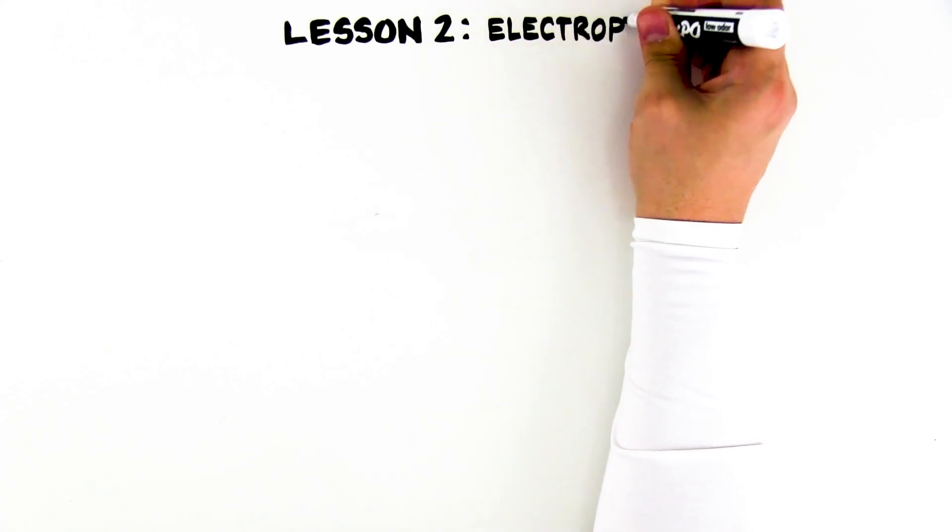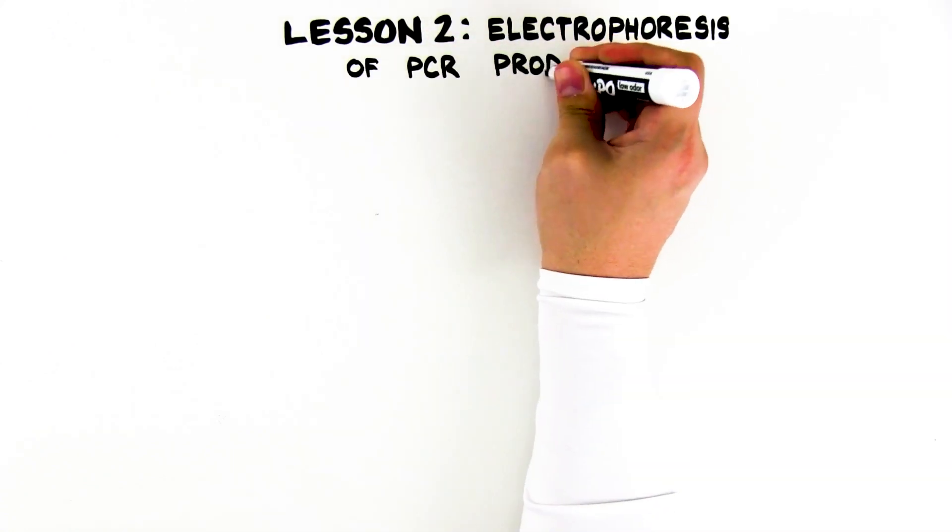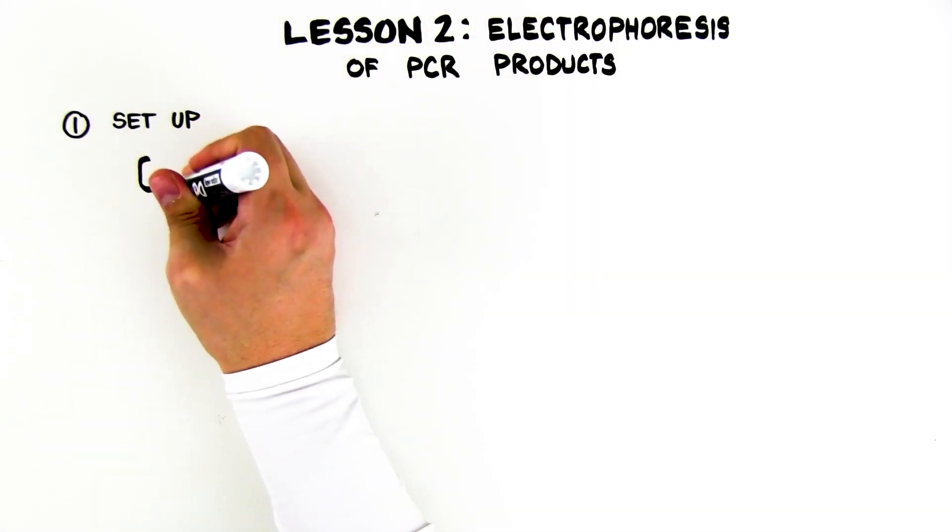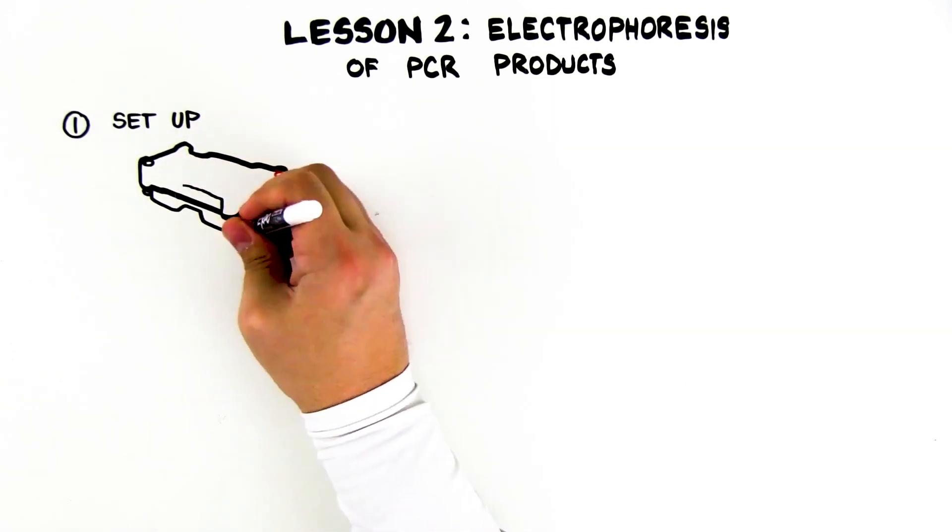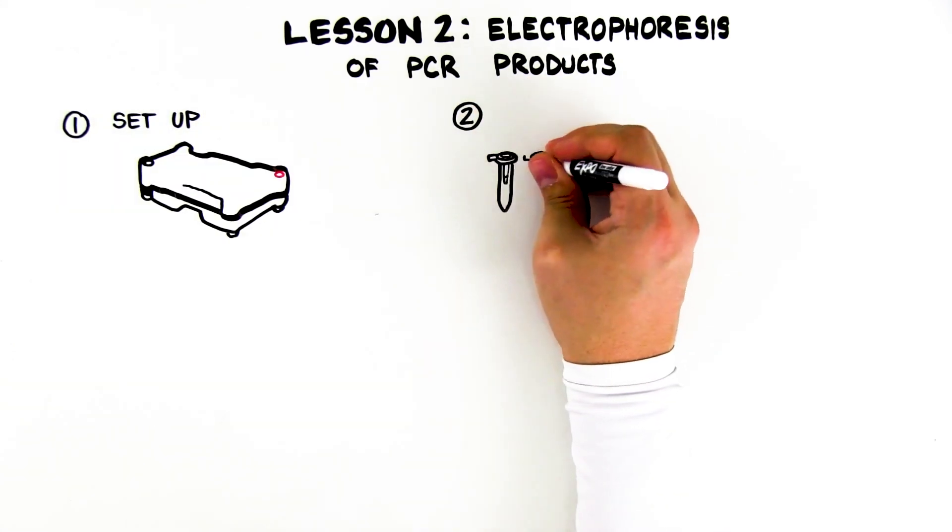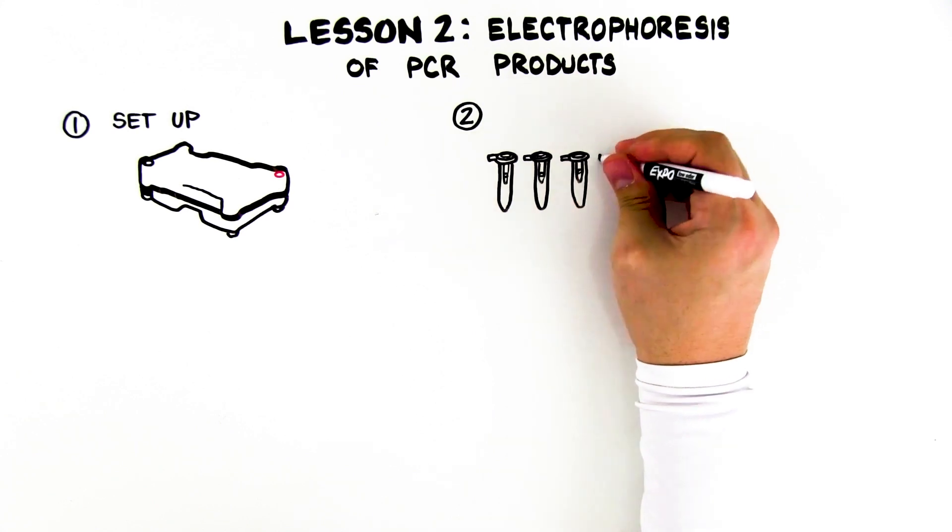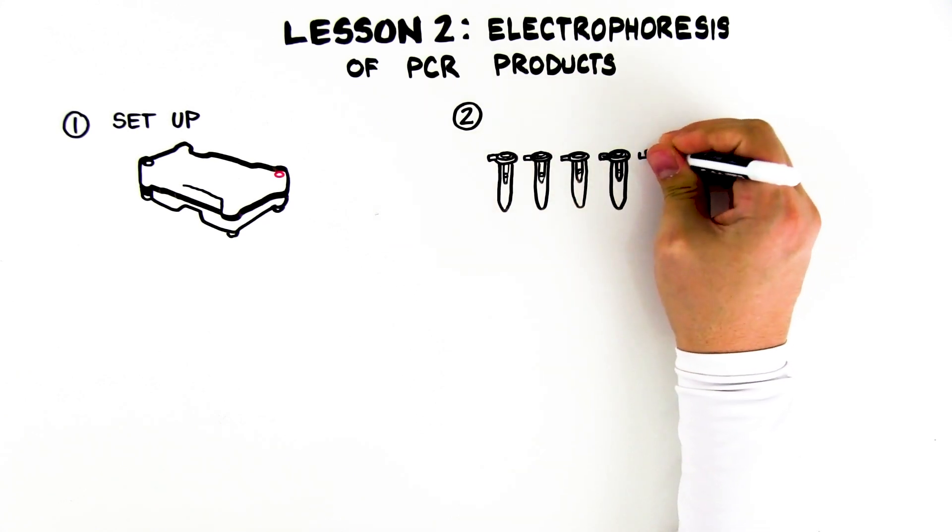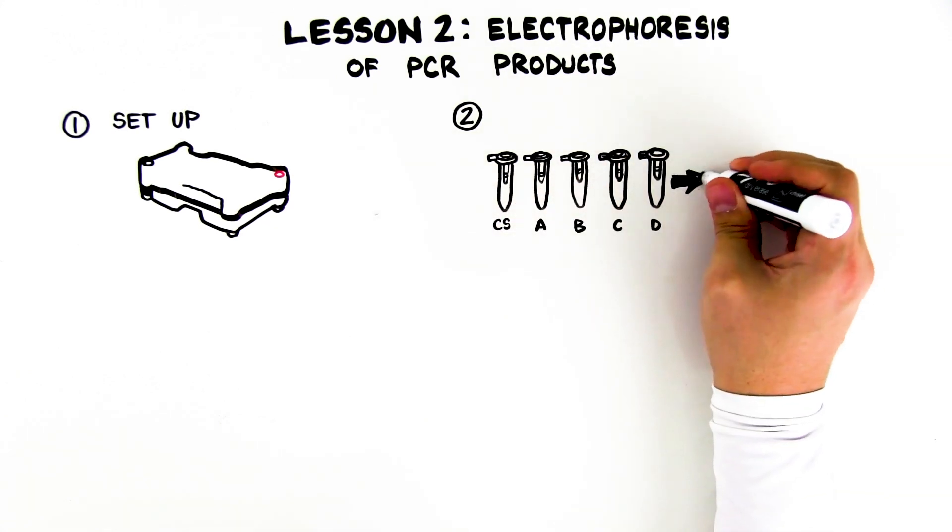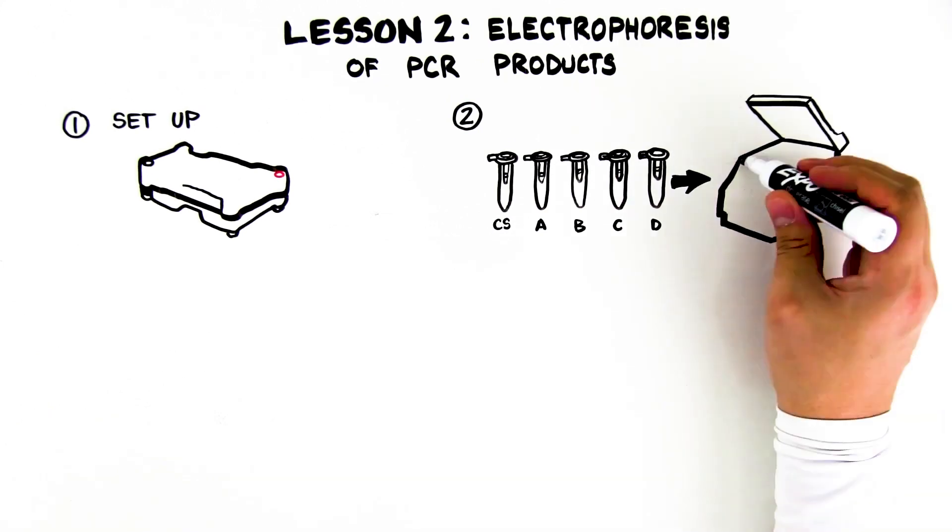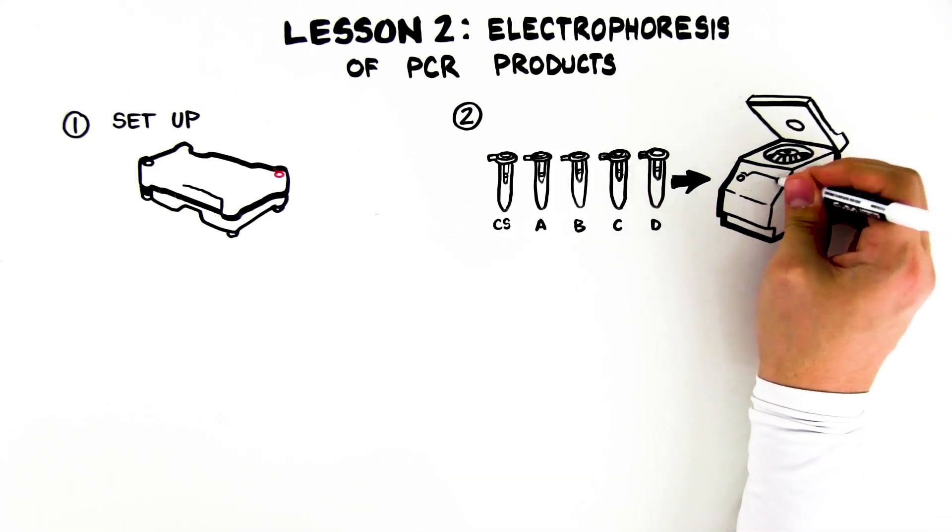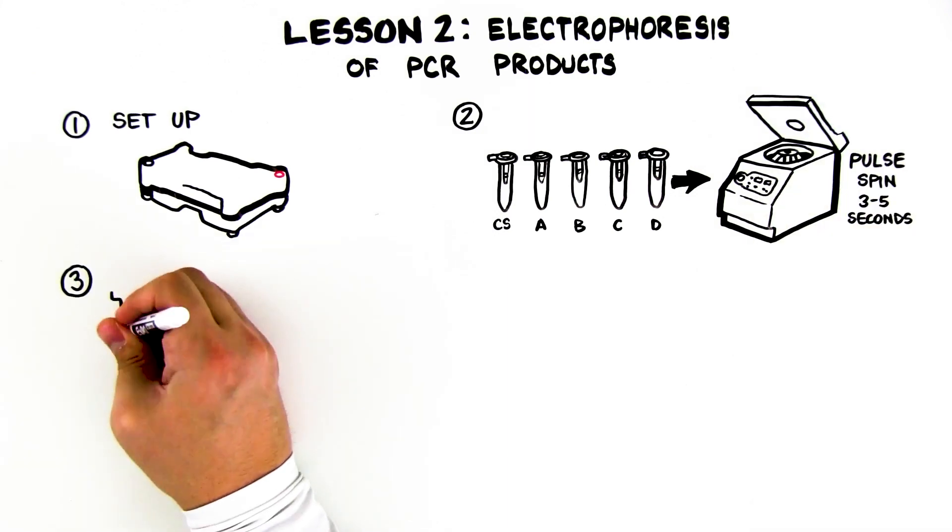Lesson 2: Electrophoresis of PCR products. Step 1: Set up your gel electrophoresis equipment as instructed. Step 2: Obtain your 5 PCR tubes from the previous lesson. Place your PCR tubes in capless tubes and pulse spin in a balanced microcentrifuge for a few seconds to collect all liquid to the bottom of the tube.